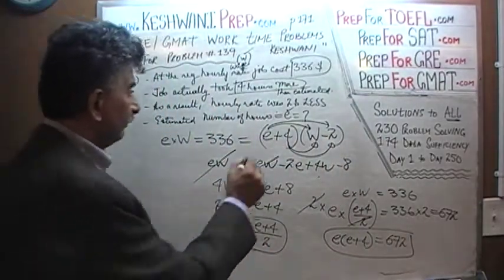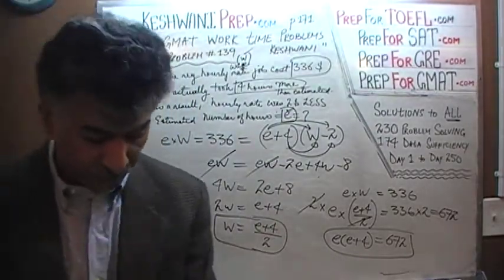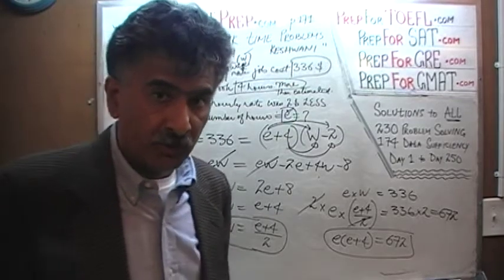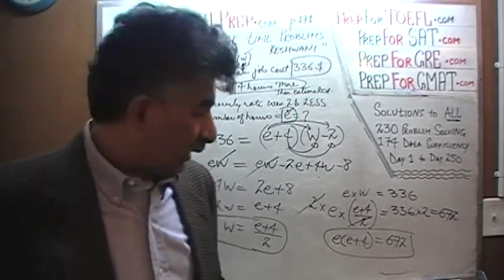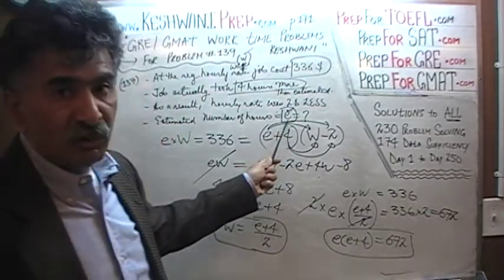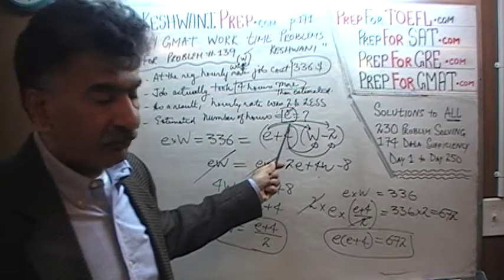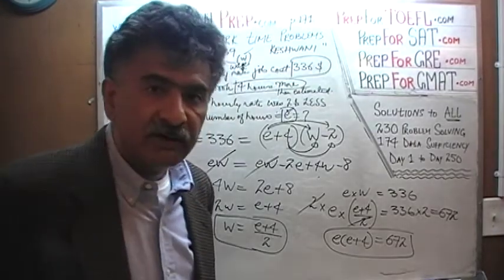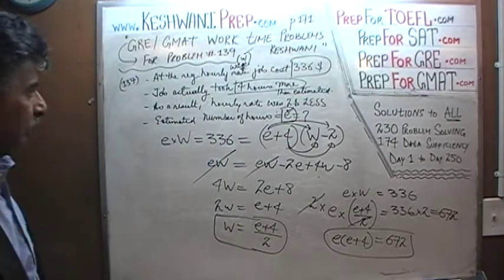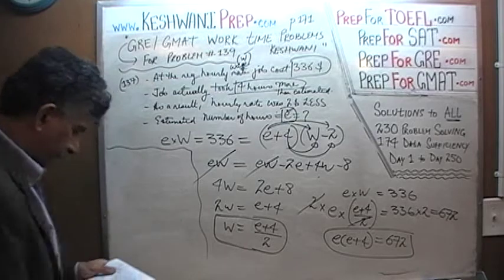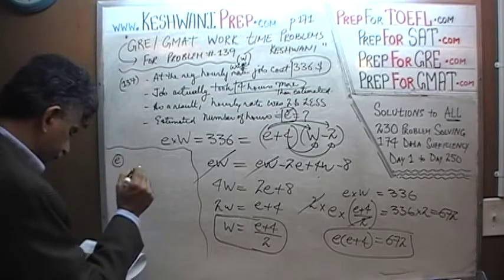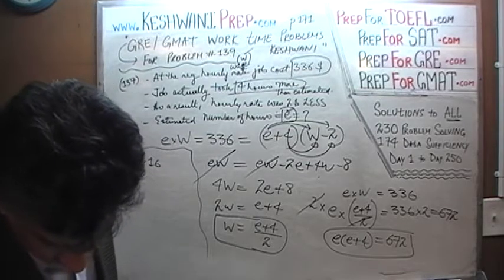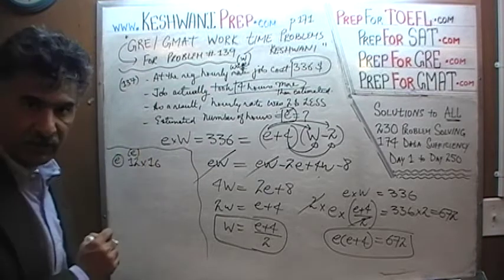The answer choices express the value of E — the estimated number of hours. We can plug those values into E times E plus 4 and see which equals 672. Answer choice E says 12. If E is 12, then E plus 4 is 16, and 12 times 16 is less than 400 — way less than 672. Answer choice D says 14. Then 14 times 18 is still less than 20 times 20 which is 400 — way too small. Answer choice C says 16. Then 16 times 20 is still less than 400. So E, D, and C are all too small.